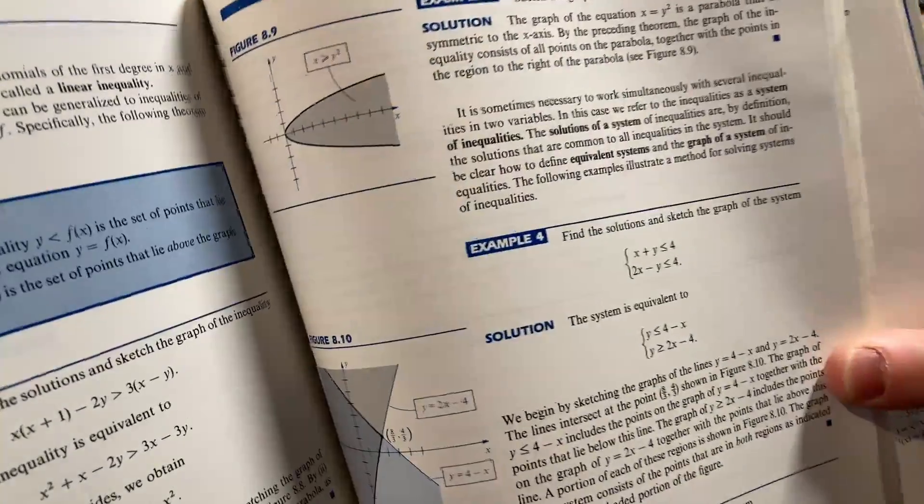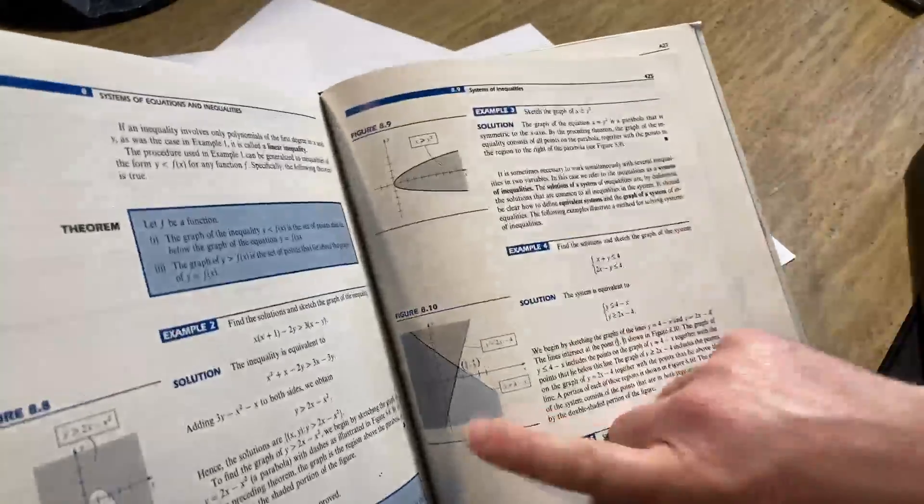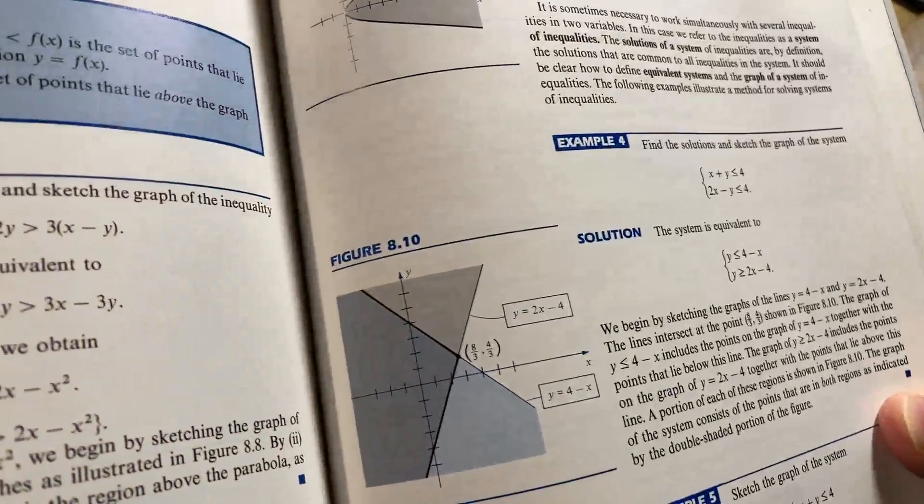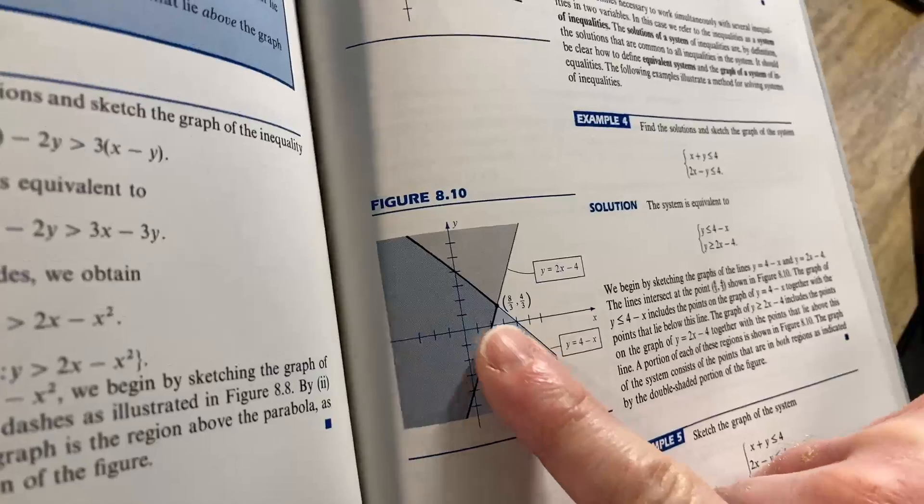And because you have an equal to part in both inequalities, you use solid lines. Whereas if it was like a less than or greater than, you would use a dotted line. And then here you see the picture. Oh, this is good. Look, they have the picture here. See if we can make sense of it.